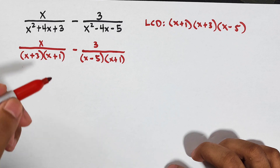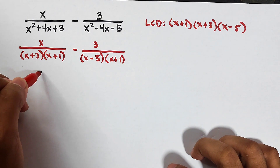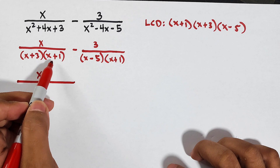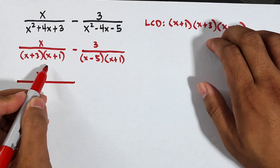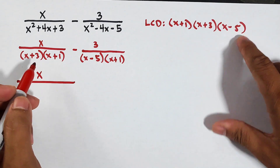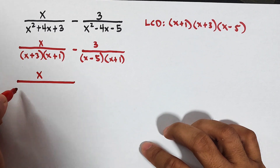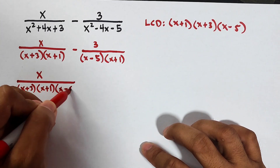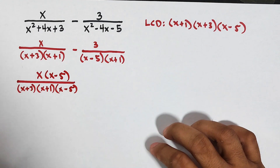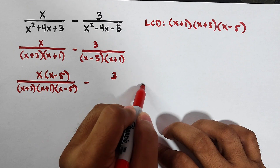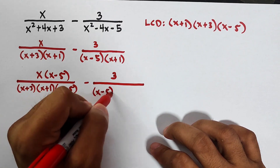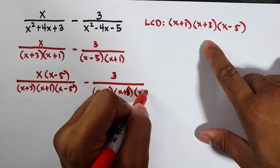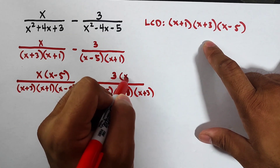Applying the same method, we need the denominators to match the LCD. For x over x plus 3 times x plus 1, the missing factor is x minus 5, so we multiply both the denominator and numerator by x minus 5, giving x times x minus 5 over x plus 3 times x plus 1 times x minus 5. For minus 3 over x minus 5 times x plus 1, the missing factor is x plus 3, so we multiply both numerator and denominator by x plus 3.